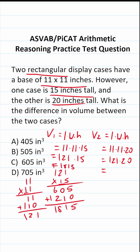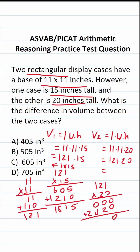Now let's find the volume of the second case. We have 121 times 20. 0 times 1 is 0, 0 times 2 is 0, 0 times 1 is 0. Before we start multiplication with this 2, bring in a 0 placeholder. 2 times 1 is 2, 2 times 2 is 4, 2 times 1 is 2. Add this up: 0, 2, 4, 2. So this volume is 2420.